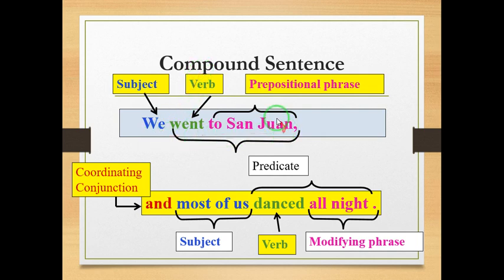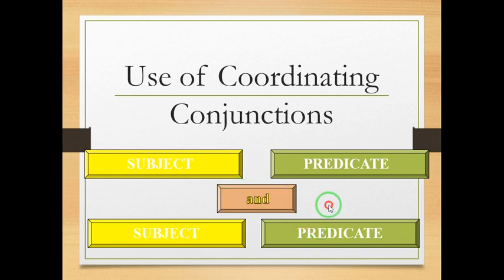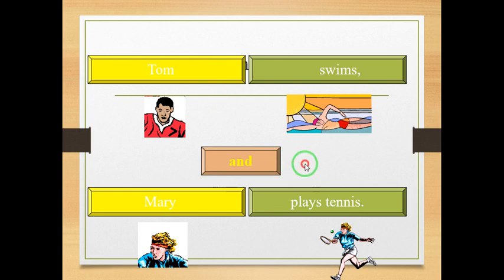We went to San Juan is a complete simple sentence. I bring another complete sentence: Most of us danced all night. I joined them with a comma and a coordinating conjunction, and, and they make a compound sentence. Tom swims and Mary plays tennis. Tom swims is a complete sentence. Mary plays tennis is another complete sentence. We joined these two complete sentences together with the conjunction and, and they made a compound sentence.